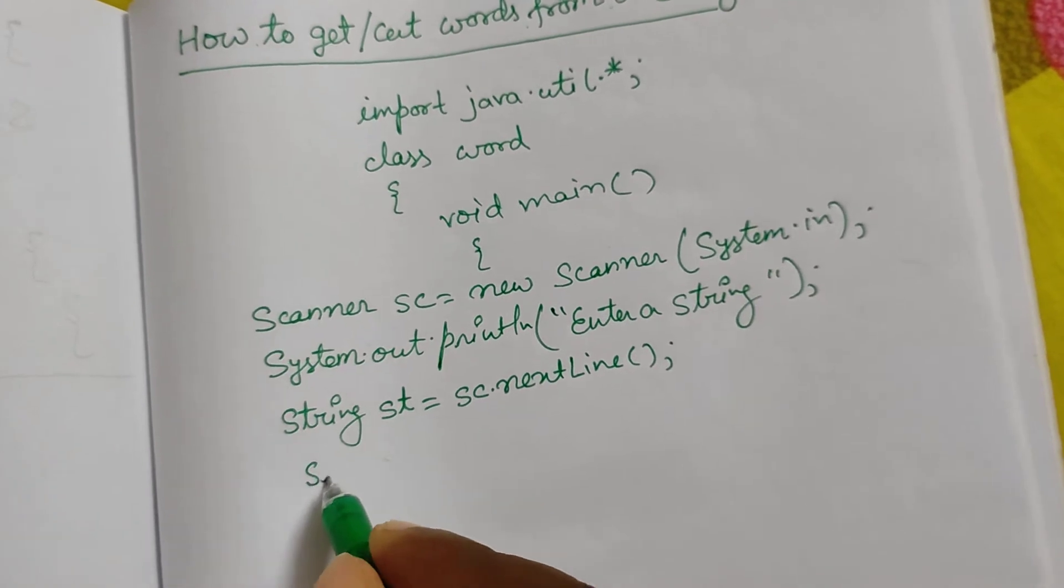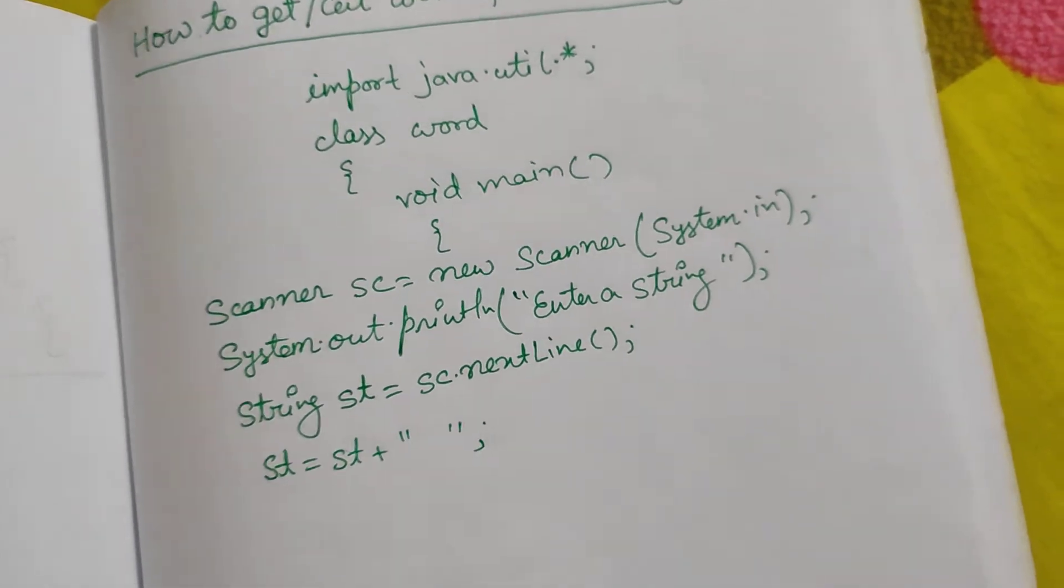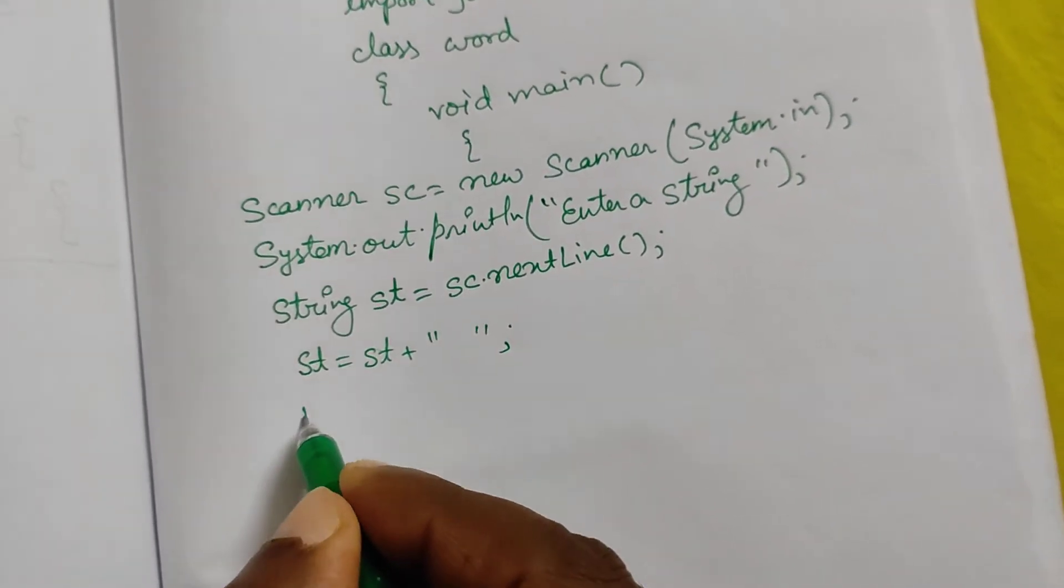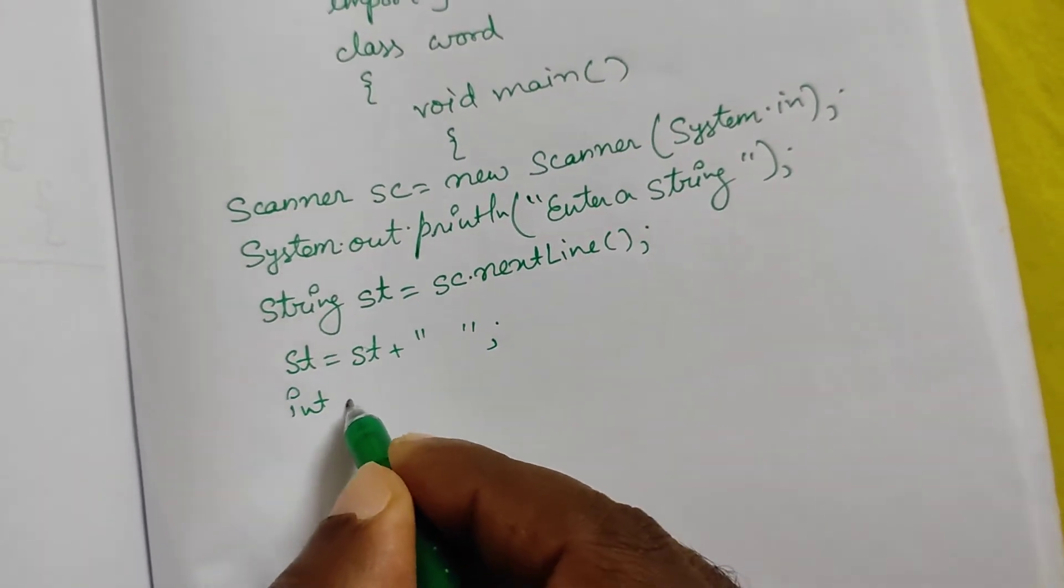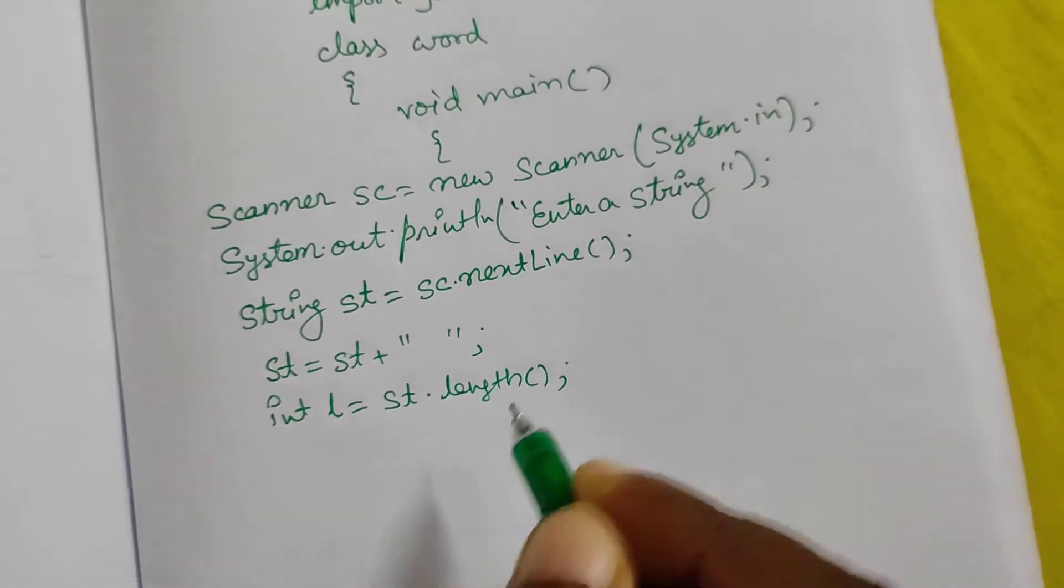So we will write st = st + " ". Now we will find out the length: int l = st.length(). We have a length function.